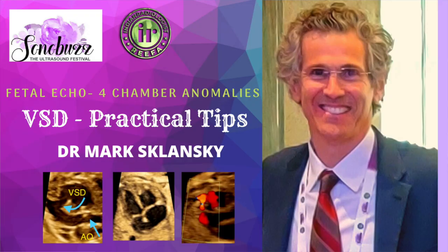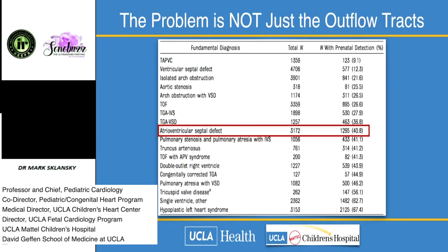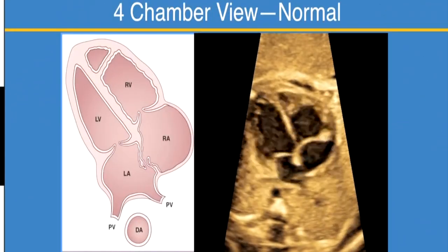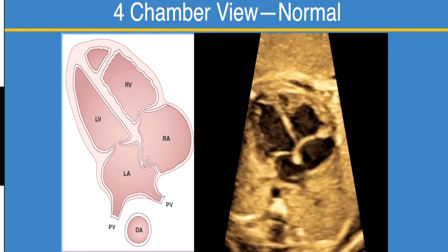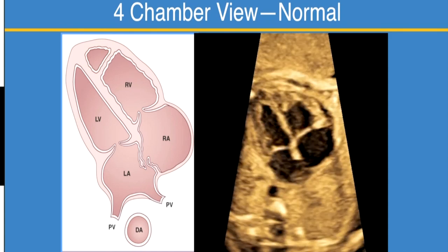Let's go back and talk more about four-chamber view abnormalities. This paper from the United States looks at the percentage of cases of major heart disease detected before birth. Even AV canal defects — a classic four-chamber view abnormality — are being missed in the US. We really need to get better at evaluating the four-chamber view and identifying its abnormalities, not just focus on the outflow tracts.